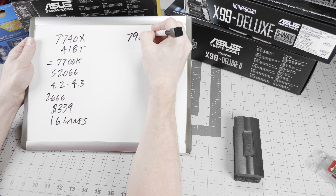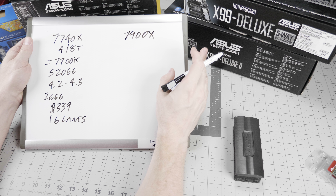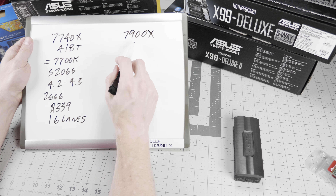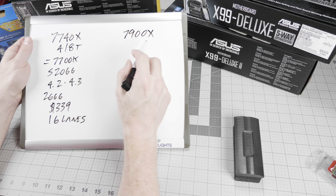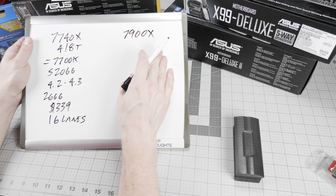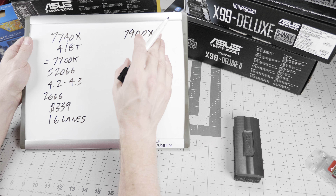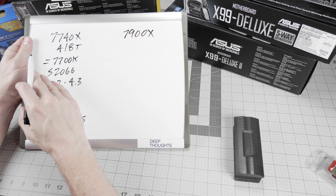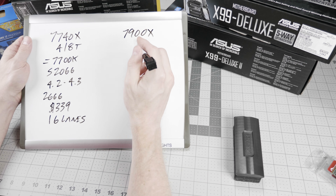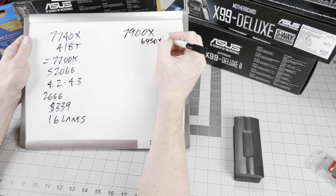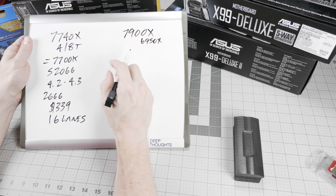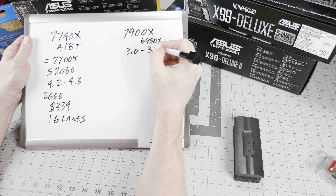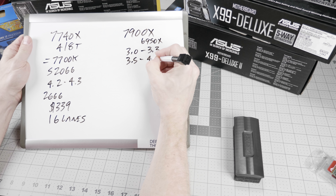If you are ready right now for high performance with 40 lanes of PCI Express, the 7900X is the CPU of choice. It's the first CPU in the lineup to have 40 lanes of PCI Express and also has the highest core clock of all the CPUs in the 40-lane lineup. It essentially replaces the 6950X with the same 10-core count, but goes from 3.0 to 3.3 GHz base clock and from 3.5 to 4.5 GHz turbo.